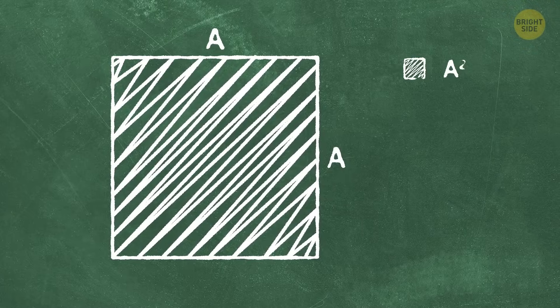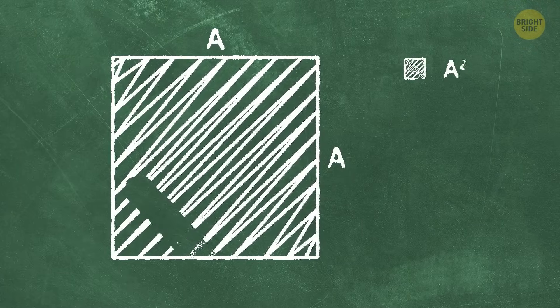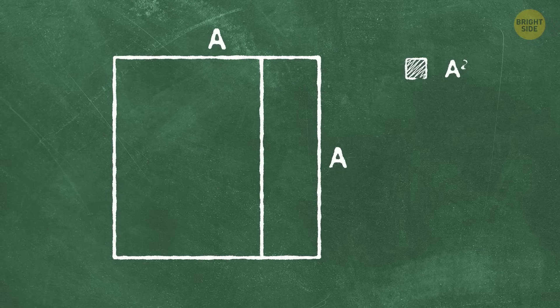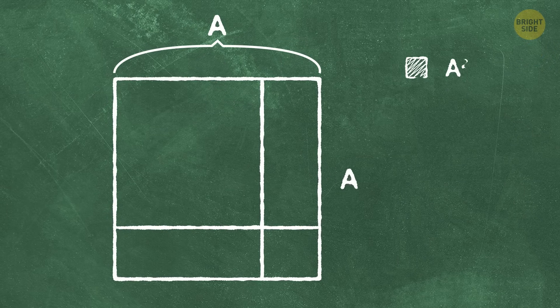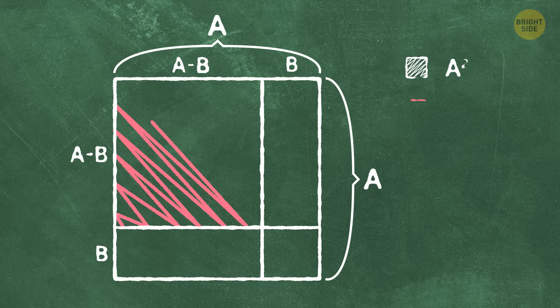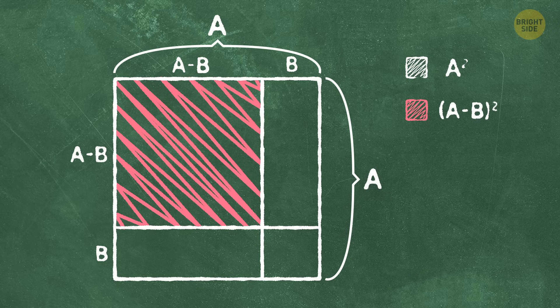Then, since we have the subtraction on the left side of the formula, we need to make the side smaller by b. So, we divide it like this, with this side being equal to b. Now, this square right here has a side of a minus b, and its area is a minus b squared, which is the left side of the equation here.